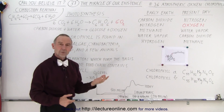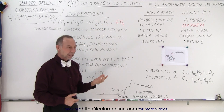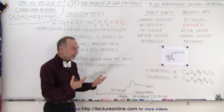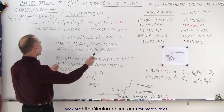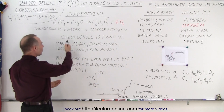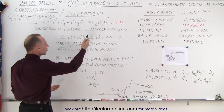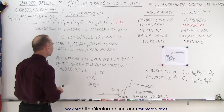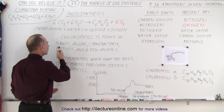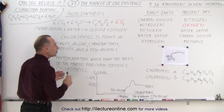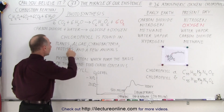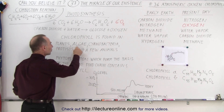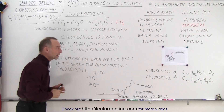That's quite amazing. And where do we find that chlorophyll? Well, chlorophyll is found in plants, algae, cyanobacteria, protists, and a few animals. So primarily, plants, algae, and cyanobacteria.